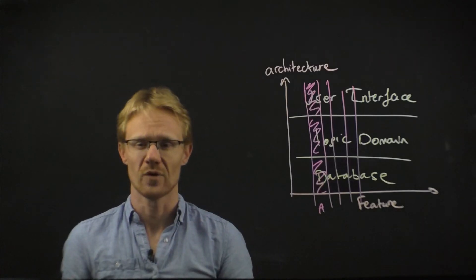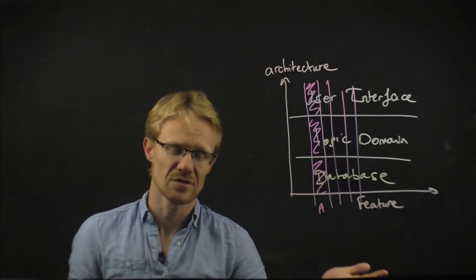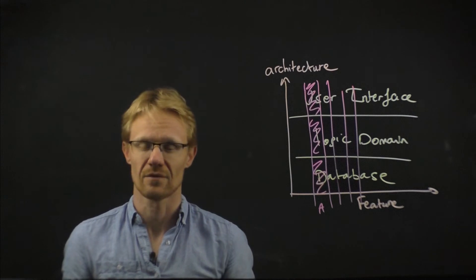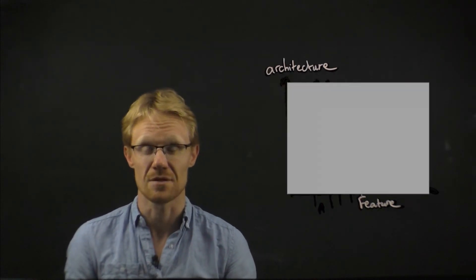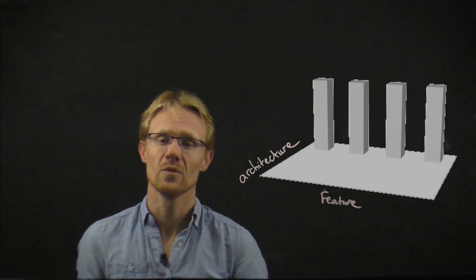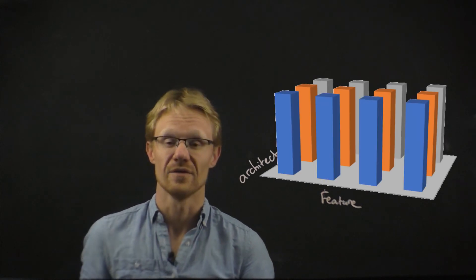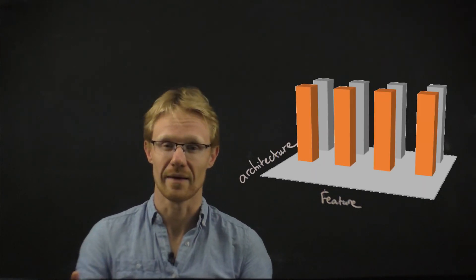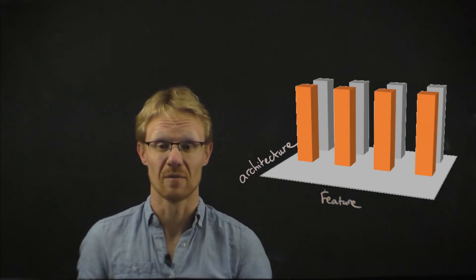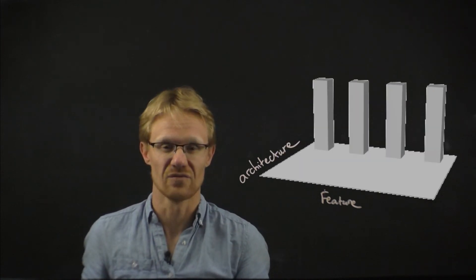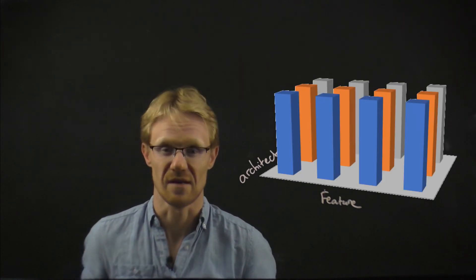So how does this fit with this idea of incremental and iterative delivery? Well, in a previous video, I drew this diagram. On this diagram, we looked at the scope, or the features, and the architectural layers. We can add the fidelity as a third dimension to this graph.